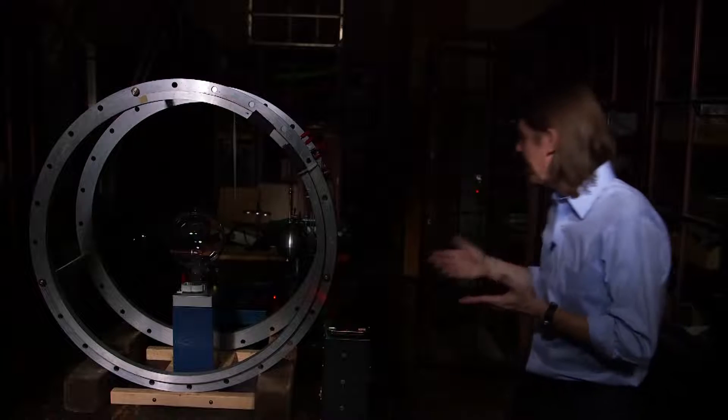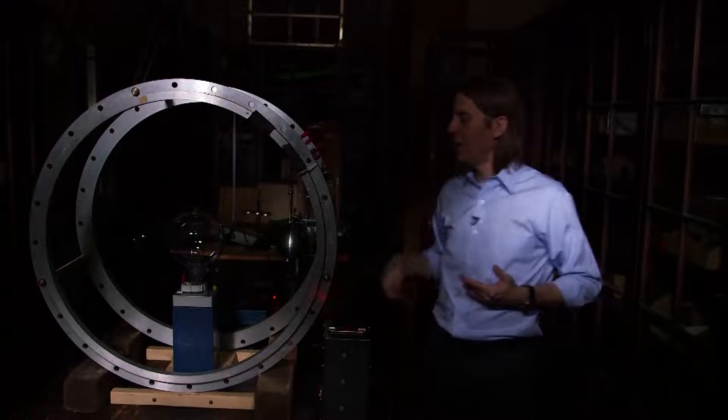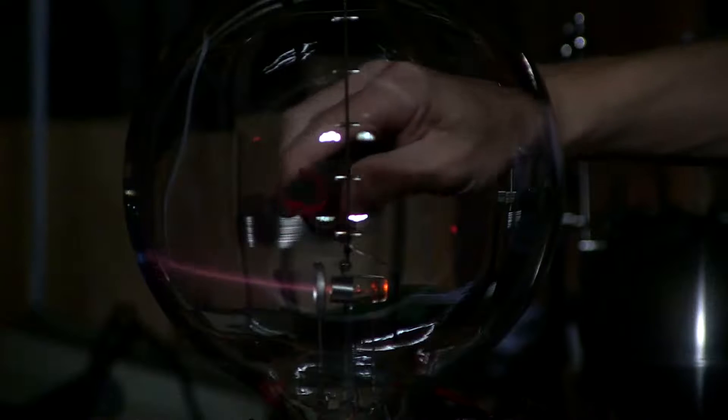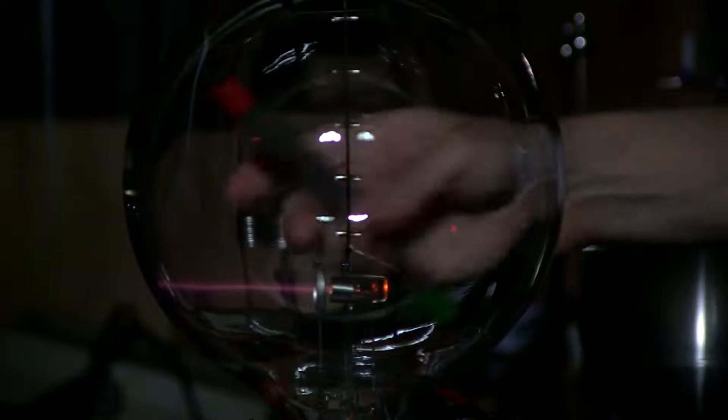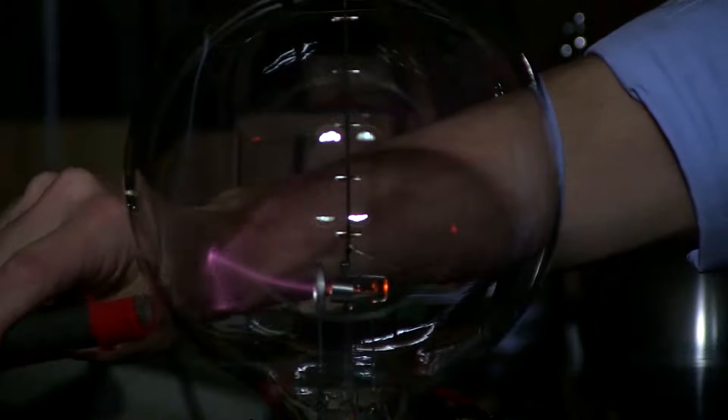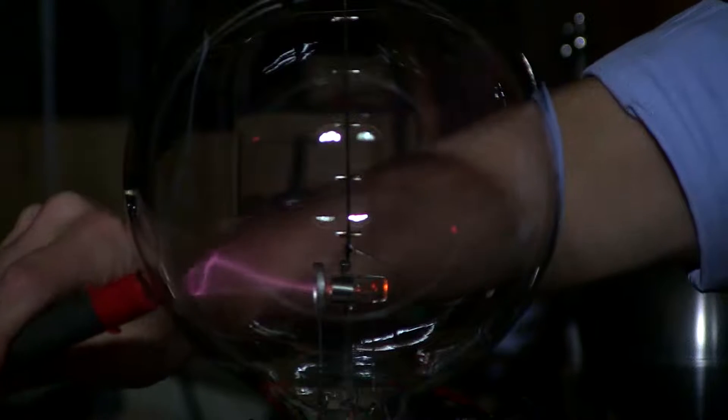Now we know that if we bring a magnet nearby it'll deflect the beam. So here's my north-south bar magnet and sure enough one pole pushes it up, another pole shoots it down. If I bring it in and do these kinds of things you can do all kinds of crazy patterns with the beam if you bring in a strong concentrated magnetic field.